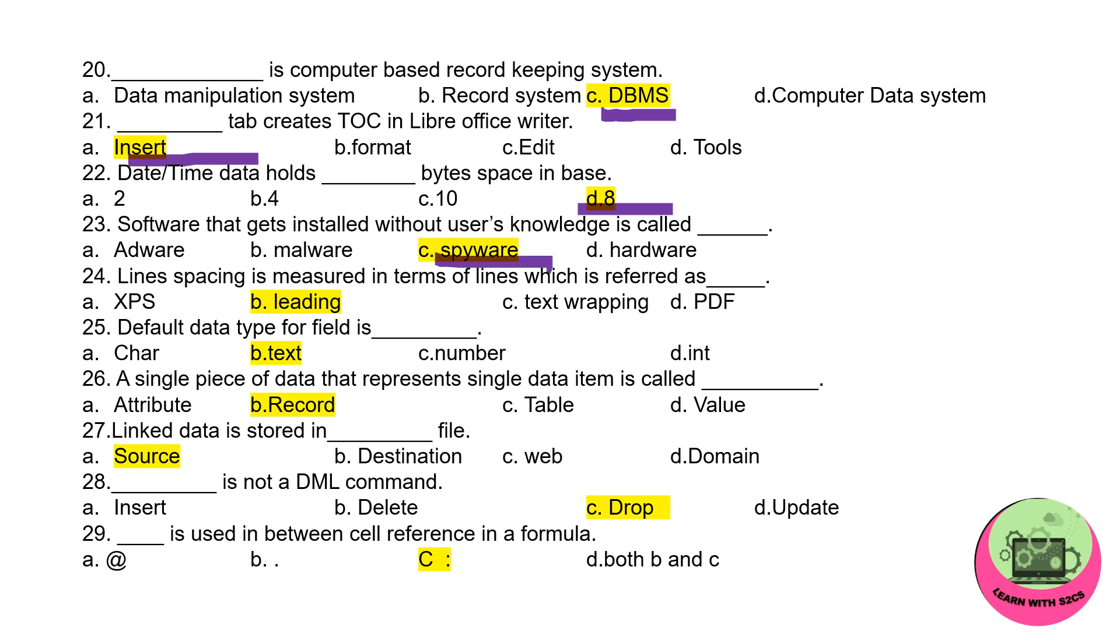Line spacing is measured in terms of lines which is referred to as leading. Default data type for field is text, which is of width of 50 characters. Single piece of data that represents single data item is called record. Linked data is stored in source file. Which is not a DML command? Drop, because drop is a DDL command. Dash is used between cell reference in a formula. You might have seen A1 colon A3, that means from A1 to A3, so colon will be used.